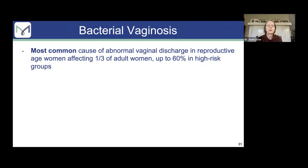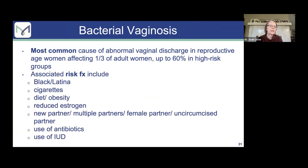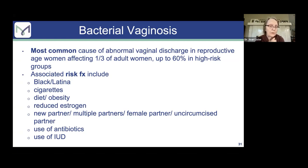Onto bacterial vaginosis. This is the most common cause of vaginal discharge in reproductive-age women and is especially common in high-risk groups — up to 60%. Risk factors include things you'd be advising anyway, like stopping smoking and controlling weight. You can add that their bacterial vaginosis is less likely to come back as an additional motivator. The history usually includes itching and malodor, and the discharge, if present, is watery, grayish, and a little bubbly. The most distinctive feature is fishy malodor — I think in the diagnosis book that's literally called fishy malodor syndrome.